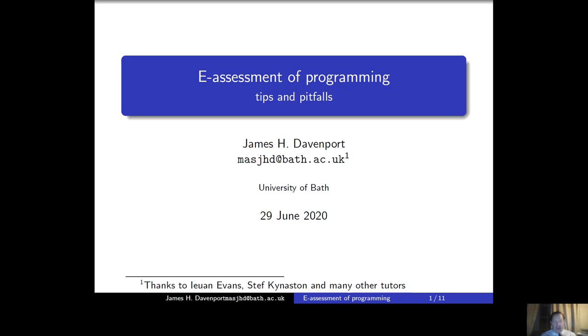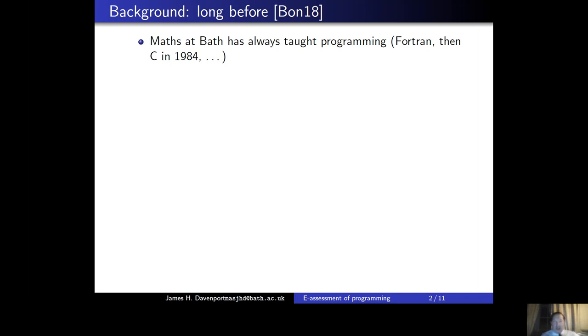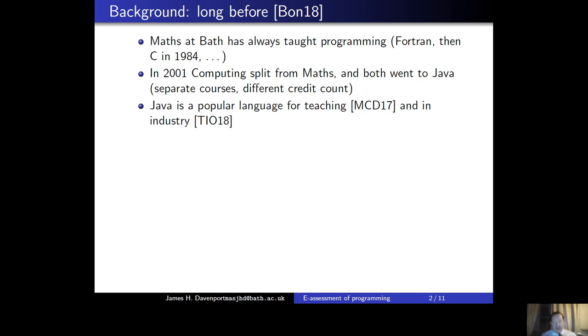So what's the context? Well, long before the Bond report, maths at Bath had always taught programming. It was Fortran when I joined and I took it to C and so on. In 2001, computing split from maths and actually both of them went to Java, different courses, different credit counts. And Java, of course, is a popular language for teaching as we discovered when we did our survey and indeed in industry. So the industry statistics show that Java is just about ahead of C as the most popular language, most of the top 10. In fact, MATLAB is 11th, so it's not a completely silly language.